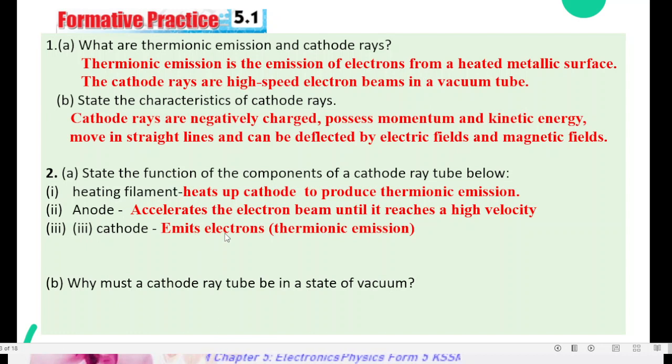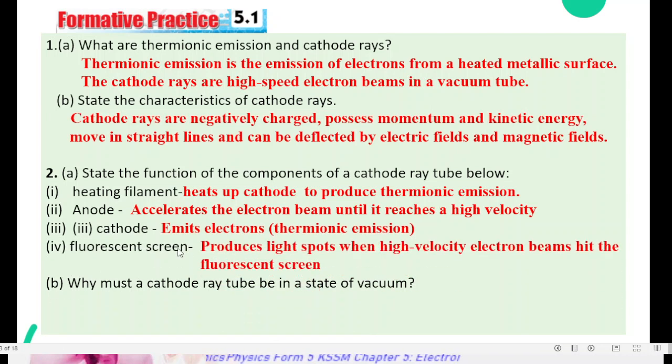Cathode emits electrons, that is, through the process thermionic emissions. Fluorescent screen to produce light spots when high-velocity electron beams hit fluorescent screen.